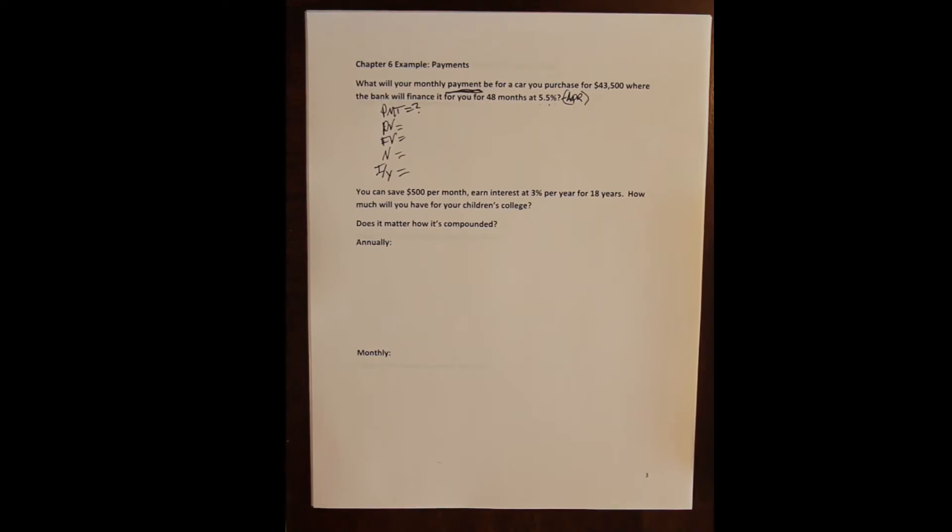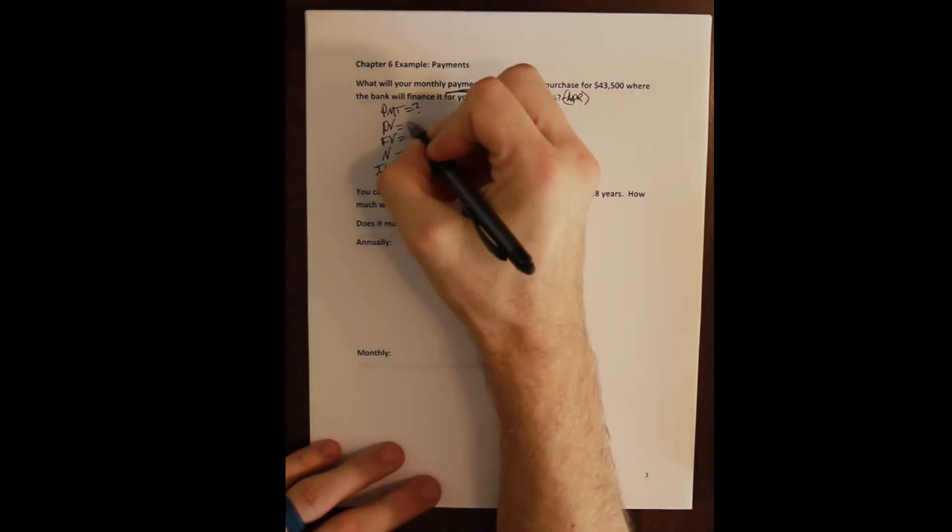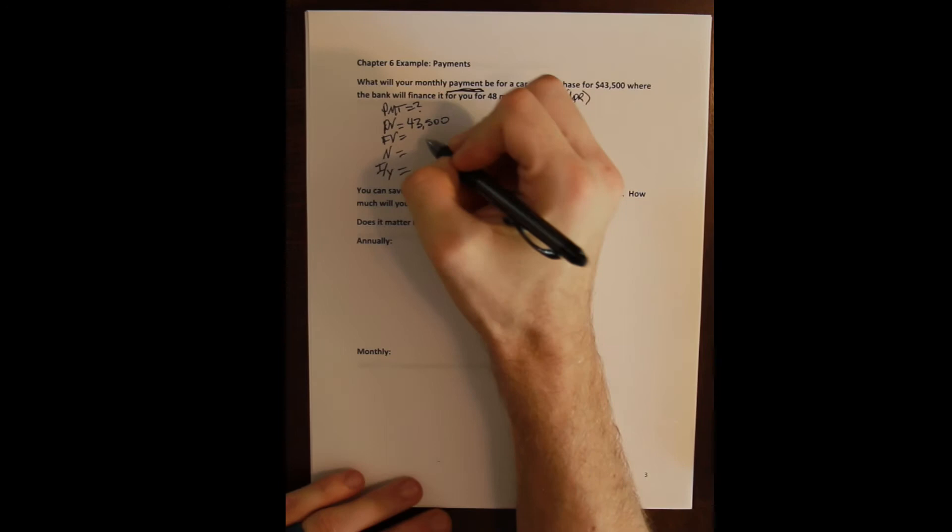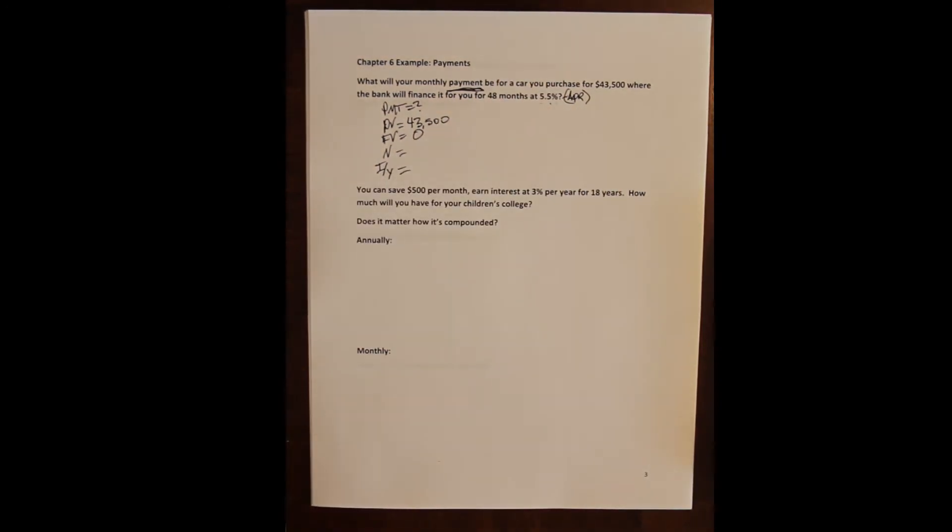If someone loans me money, that is money coming in. That is a cash inflow. So it is a positive forty three thousand five hundred dollars. Now I use that to buy the car but that's not part of the story because the story is I'm paying back this loan.